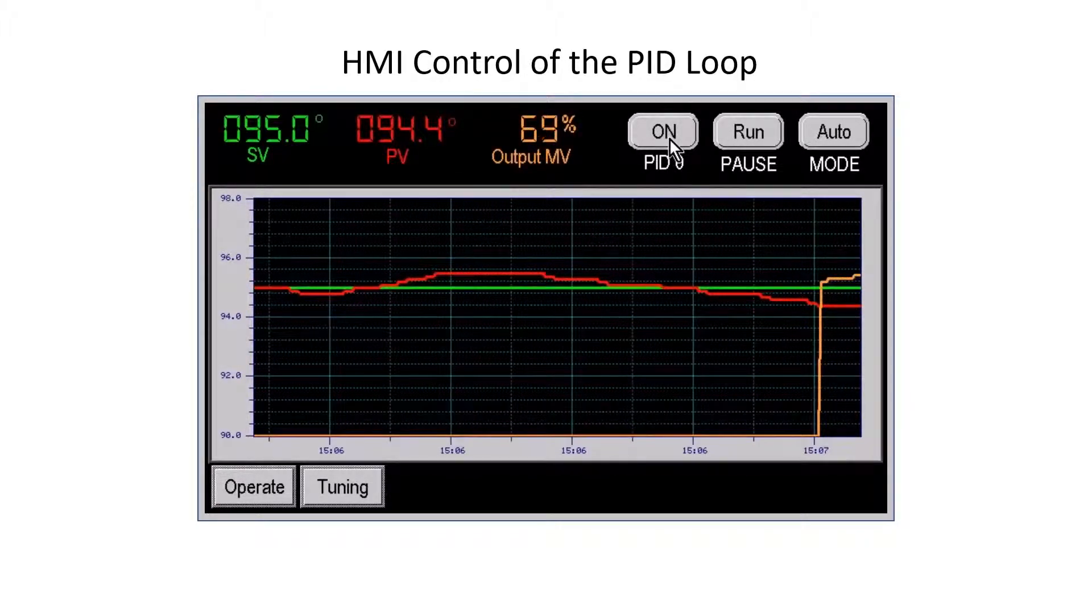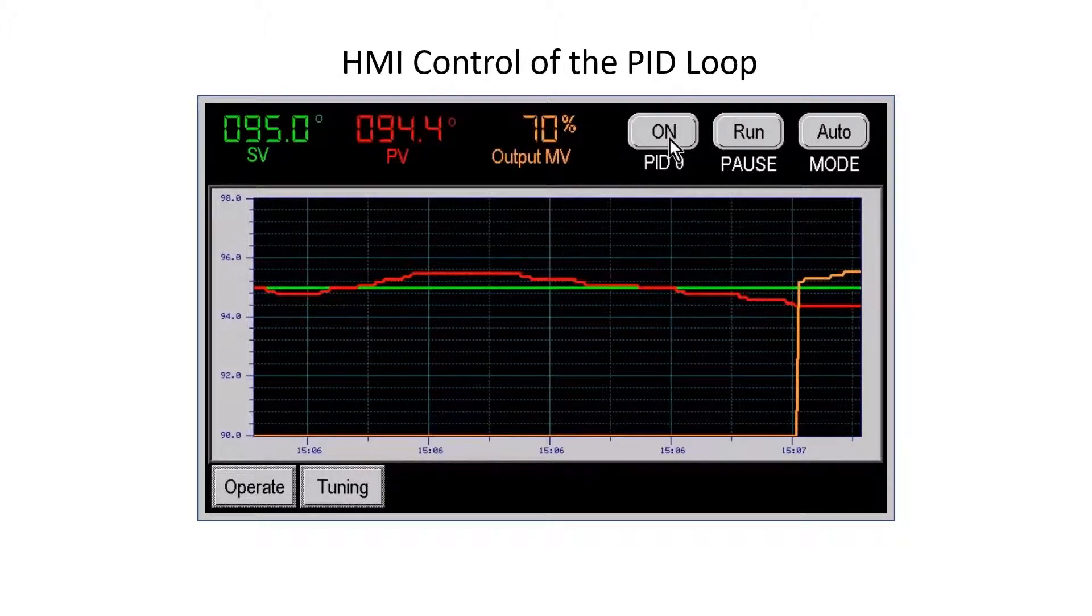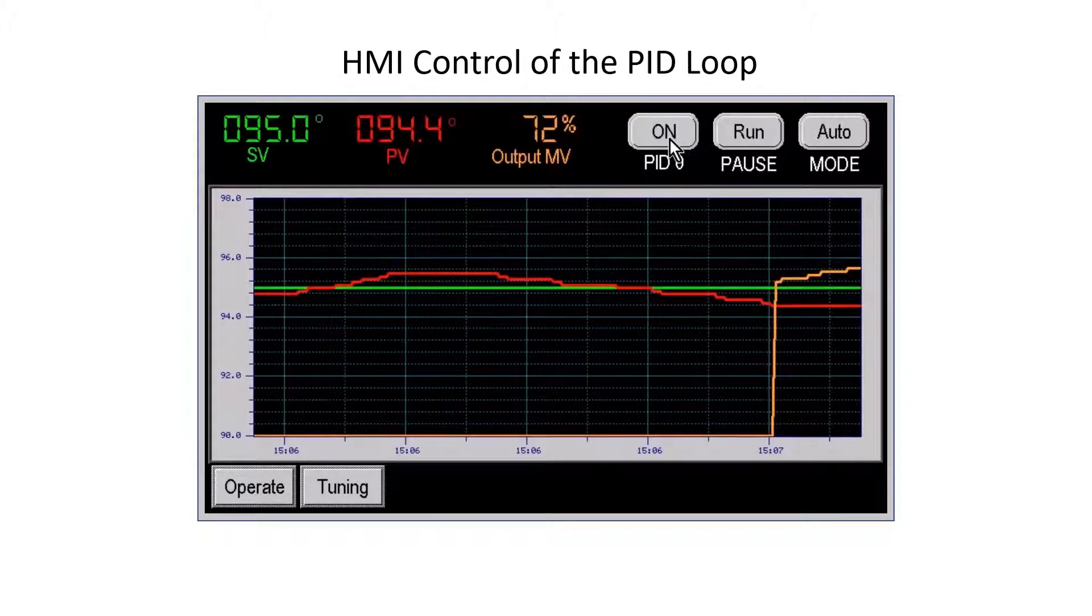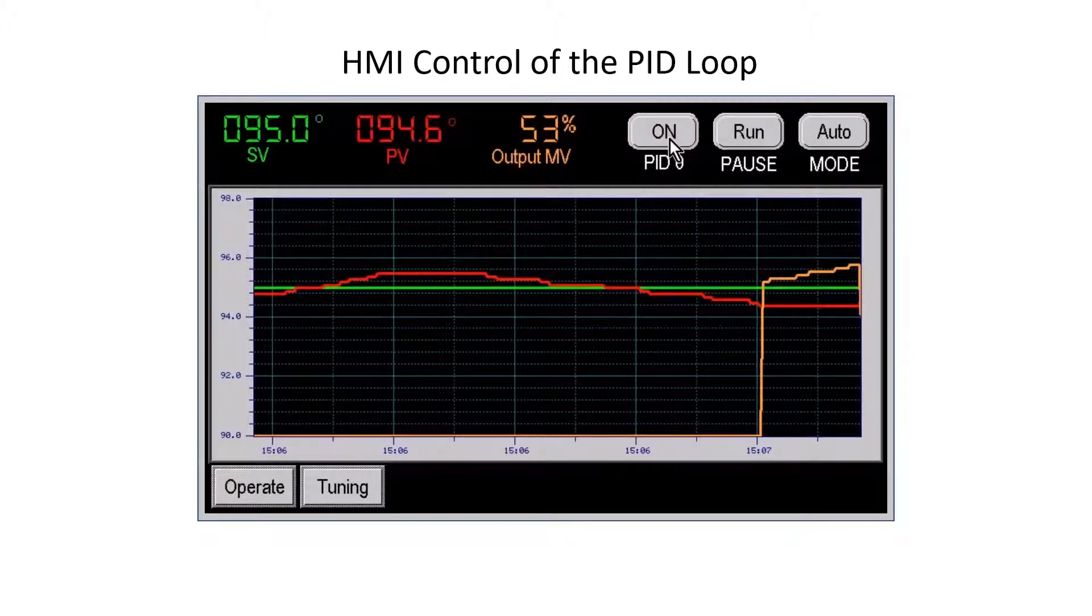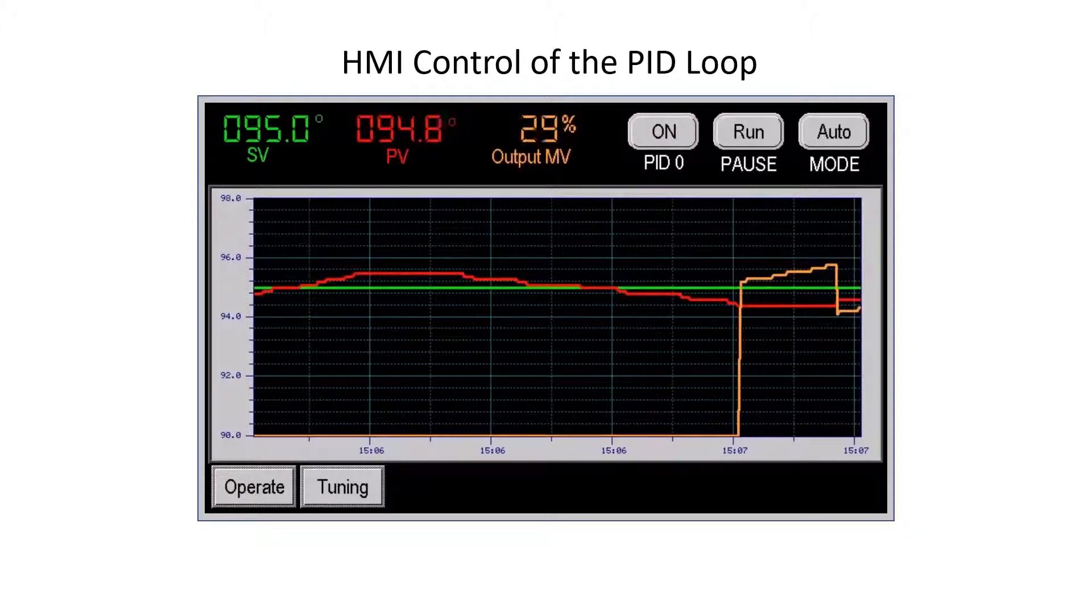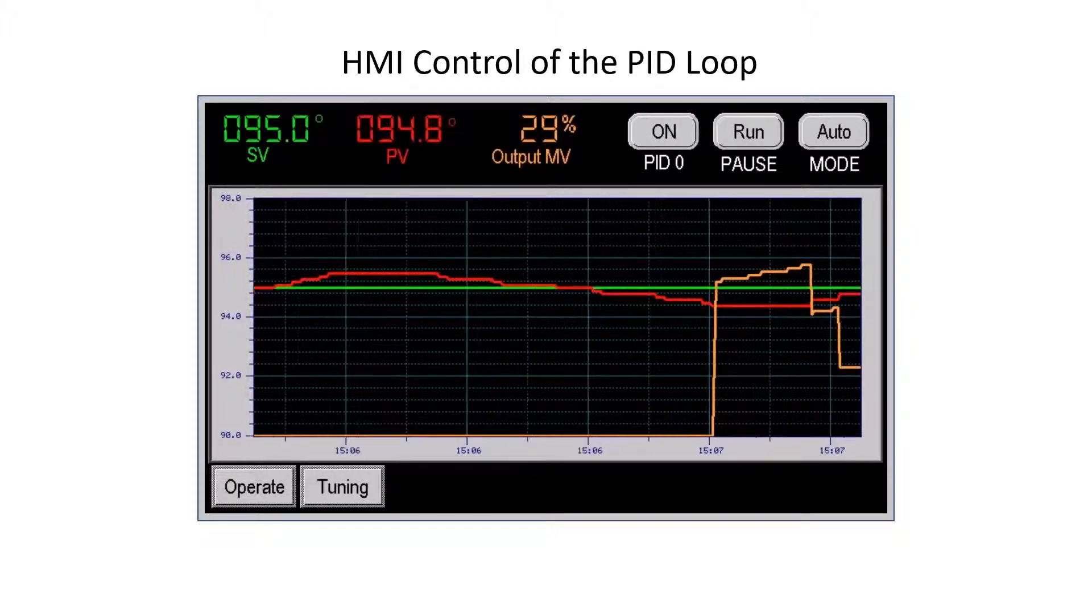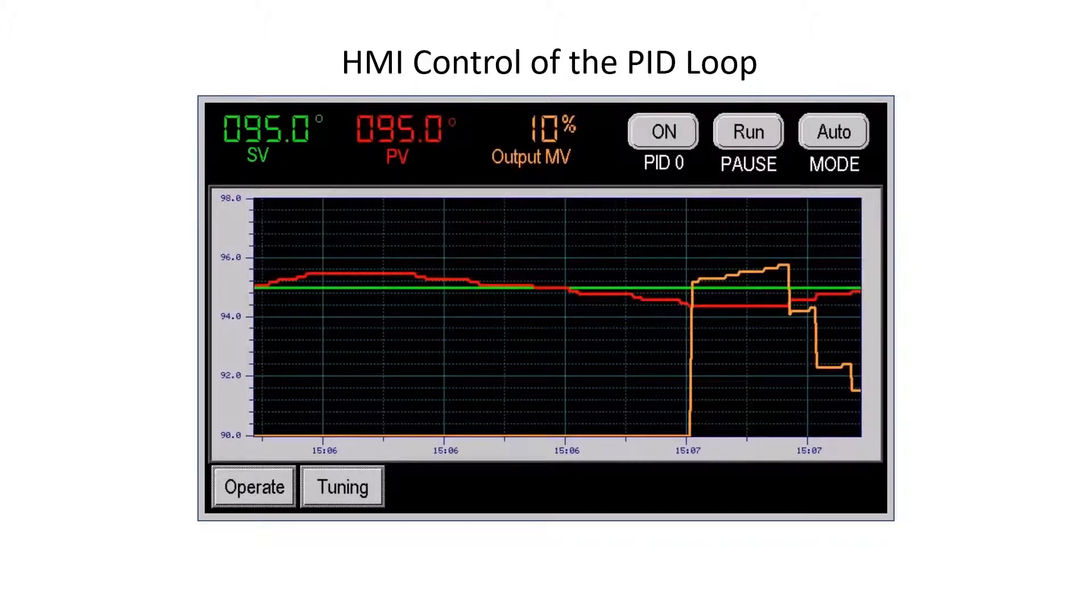The loop calculates the SV-PV error and outputs the appropriate MV output. The MV will increase or decrease as the PV nears the SV as shown on the trend graph.